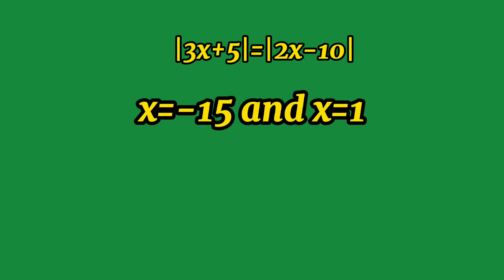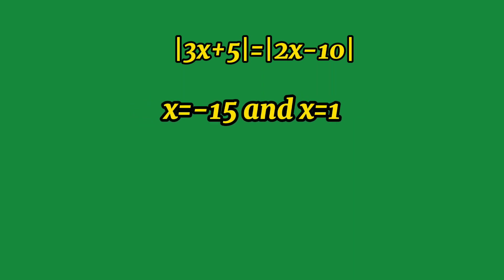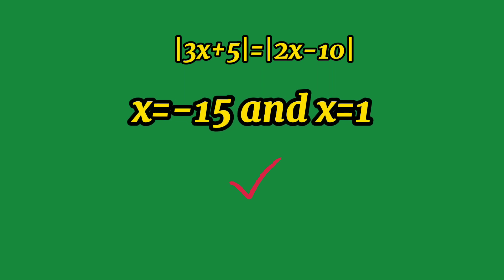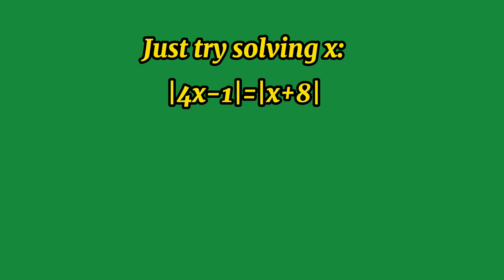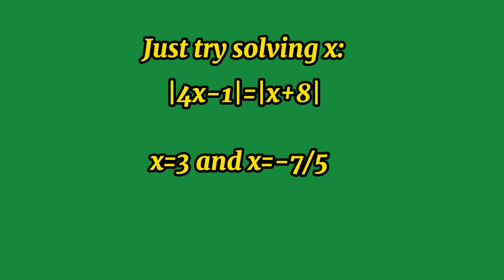So we have confirmed that the values x = -15 and x = 1 are both correct. Now it's your turn — try solving: the absolute value of 4x - 1 is equal to the absolute value of x + 8. If your answers are x = 3 and x = -7/5, then congratulations!